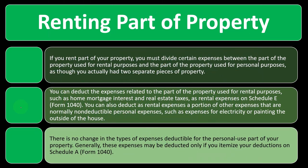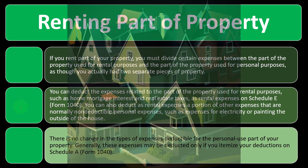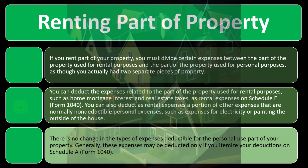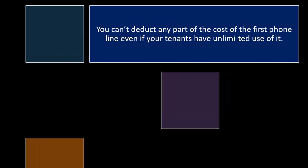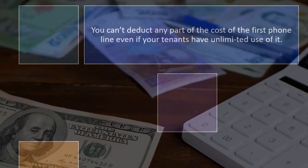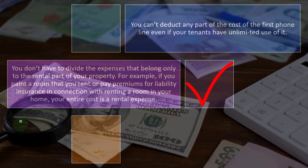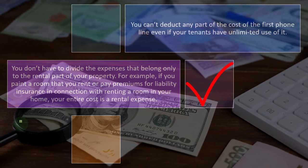There is no change in the types of expenses deductible for the personal use part of your property — generally those may only be deducted if you itemize on Schedule A. You don't have to divide expenses that belong only to the rental part of your property. For example, if you paint a room that you rent, or pay premiums for liability insurance in connection with renting a room in your home, your entire cost is a rental expense.